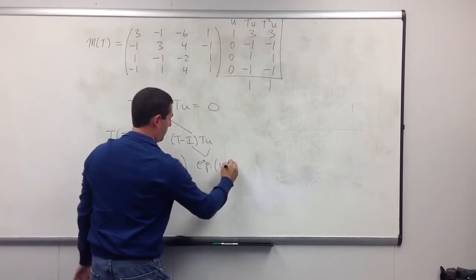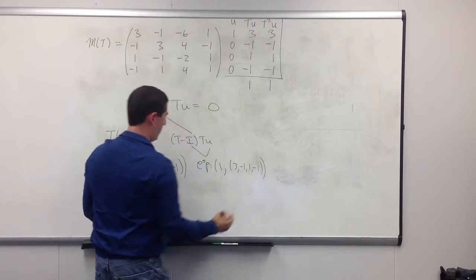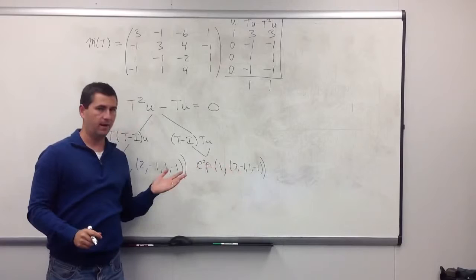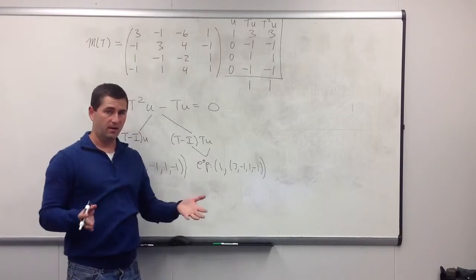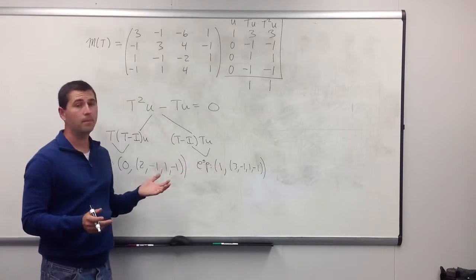And, again, the eigenvalue is going to be 1. The eigenvector would be Tu. That we just have right here. 3, negative 1, 1, negative 1. So we've built two eigenvalues and we have corresponding eigenvectors. It's not quite enough, right? We need a basis and that's going to require four vectors and we only have two.